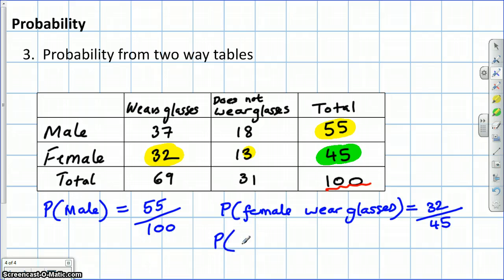I'll give you one more example of that. What's the probability, given that they wear glasses, that they are male? Well, how many people that wear glasses are male? Well, it's 37. Most of us will get that. But the denominator is going to be 69, because it's already been decided that they are male.